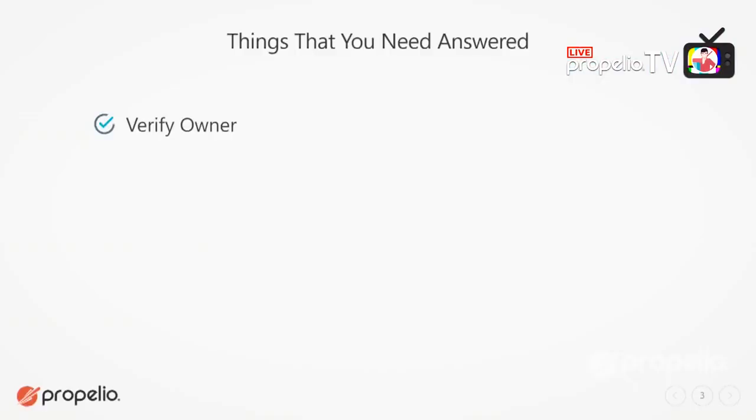What if the home is installed in a location different than what it says on the title? What if they don't have a title but they have a bill of sale? These are some of the things we need to figure out how to resolve. One of the first things I want to do is verify the owner - whoever is shown on the title should be the person I'm talking to. If not, I need to figure out why they're contacting me to sell a home that doesn't show them as the owner.